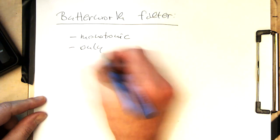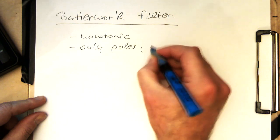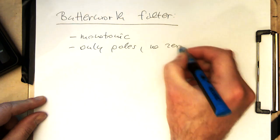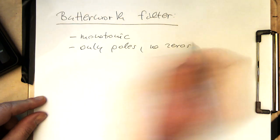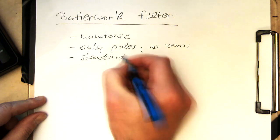It has only poles, the filter has no zeros, and it's somewhat like the standard analog filter.